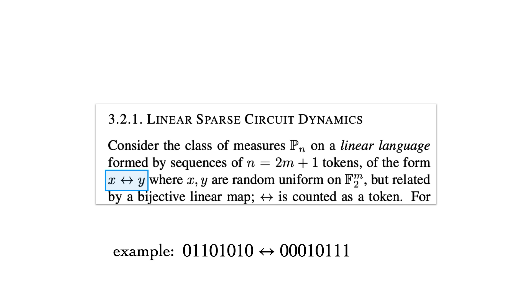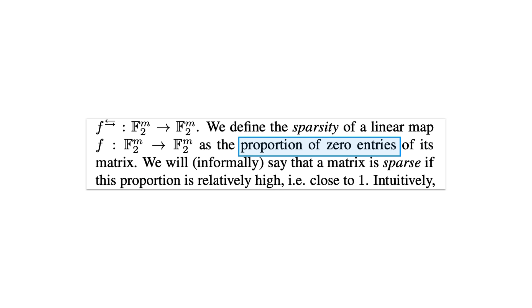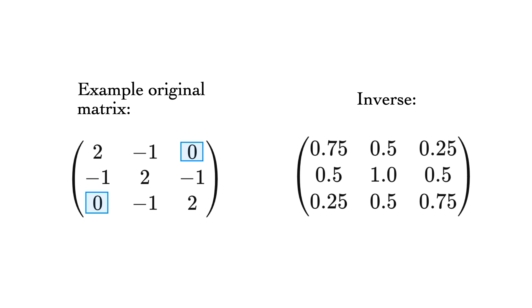That is, what proportion of the matrix that represents the linear mapping consists of zeros, and how learnable this transformation is by the model. One thing to note here is that the inverse of a sparse mapping is usually much less sparse. That is, it has significantly fewer zeros in its corresponding matrix.